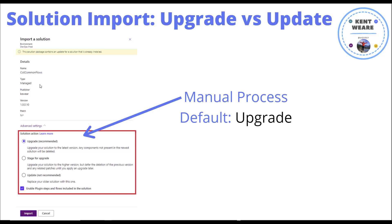If you expand advanced settings when importing, you'll see the different modes — upgrade versus update. When you upgrade your solution, any components not present in the newest solution will be deleted. Permissions are something we assign to the object in the environment itself; they aren't part of our solution package. So when we upgrade, that naturally gets blown away.